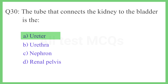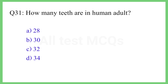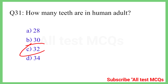Question No. 31. How many teeth are there in a human adult? The correct answer is Option C: 32.